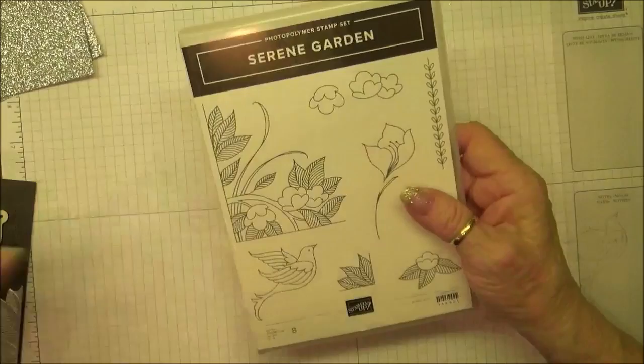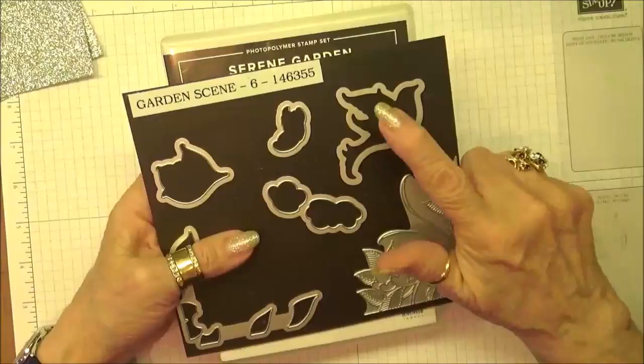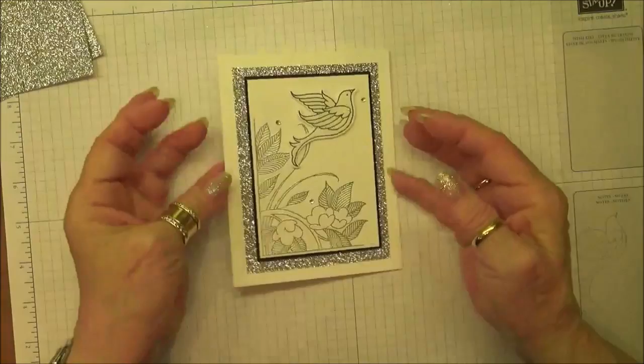The stamp set that I used is the new Serene Garden by Stampin' Up, and I used the matching framelits which are the Garden Scene. I used the dove to cut out the dove.